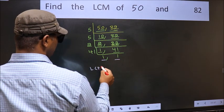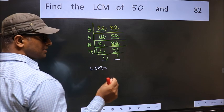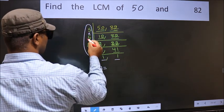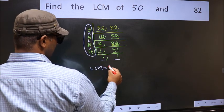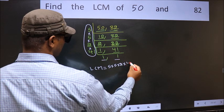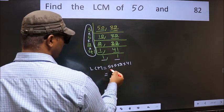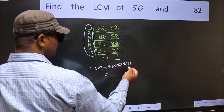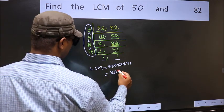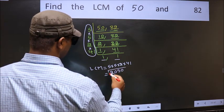So our LCM is the product of these numbers, that is 5 into 5 into 2 into 2 into 41. When we multiply these numbers, we get 2050 as our LCM.